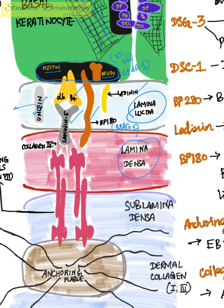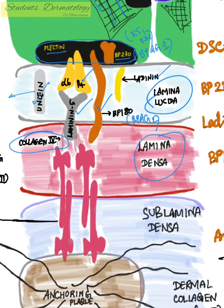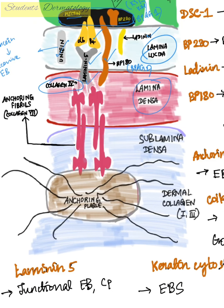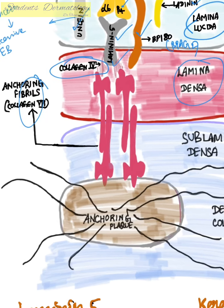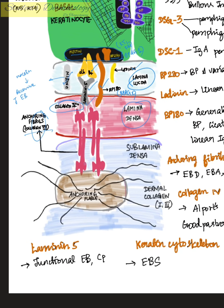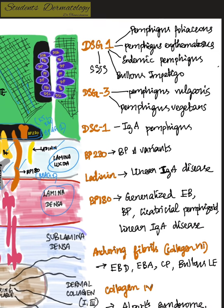Below the lamina lucida, you have the lamina densa, which is the part between the lamina lucida and the lamina fibro-reticularis. Here you have anchoring fibrils, and the main type of collagen in the lamina densa is collagen type 4. The lamina densa also contains a part of laminin 5. Below that, in the lamina fibro-reticularis, the main type of collagen is type 7 collagen.